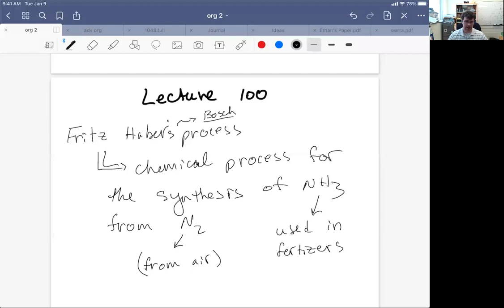Fritz Haber developed this process, apparently with Bosch, and it really kind of saved the world at the time. This was pre-World War One. The population in the world was getting so high that we weren't able to accommodate that population with our food production, our agriculture production, until Fritz Haber basically saved the world from global hunger by figuring out how to produce NH3, which led to the rapid production of fertilizers which really enhanced our agricultural production so that we could feed the world.